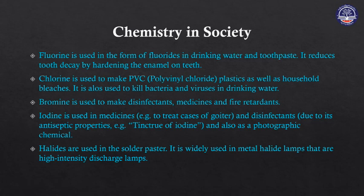Chlorine is used in the production of PVC (polyvinyl chloride). Chlorine is also used to kill bacteria and viruses. Bromine is used in various applications.